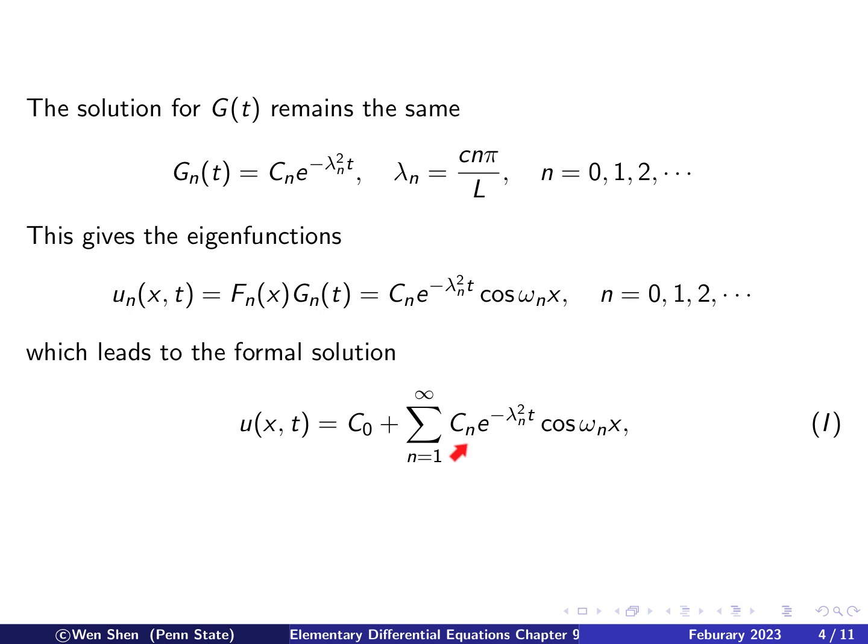We can take out the term n equals 0 because it just gives you c_0 plus the summation n from 1 to infinity of this expression. This expression is very similar to the one with the Dirichlet boundary condition, except that the sine function there is now a cosine function. So at t equals 0, this is a Fourier cosine series.